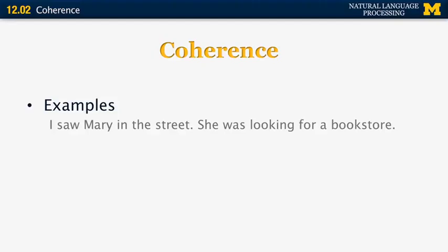The first example is: 'I saw Mary in the street. She was looking for a bookstore.' It should be pretty obvious that those two sentences fit well together. The second sentence explains a little bit about Mary and explains why I mentioned that I saw her in the street. So there's no problem here.